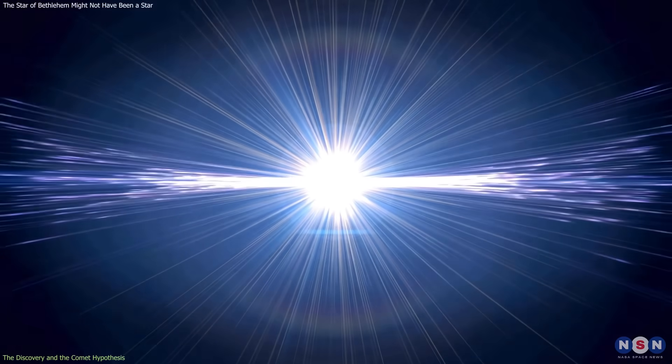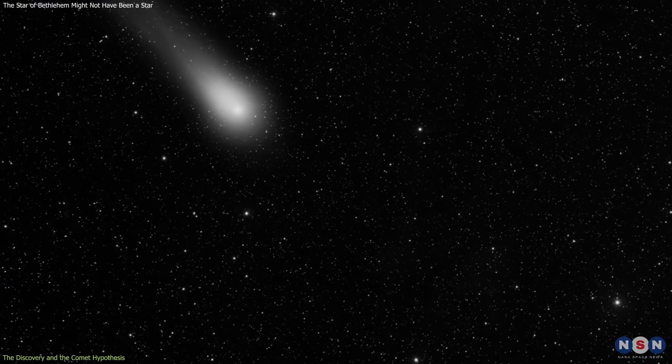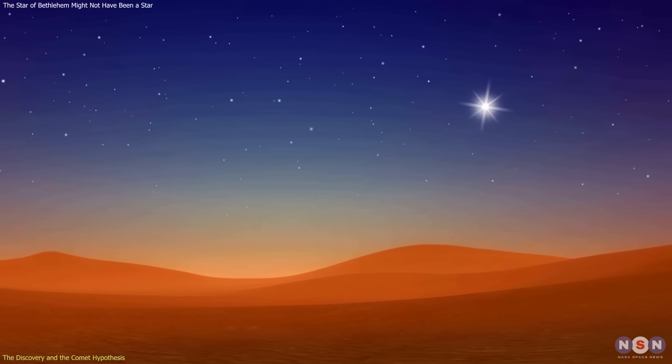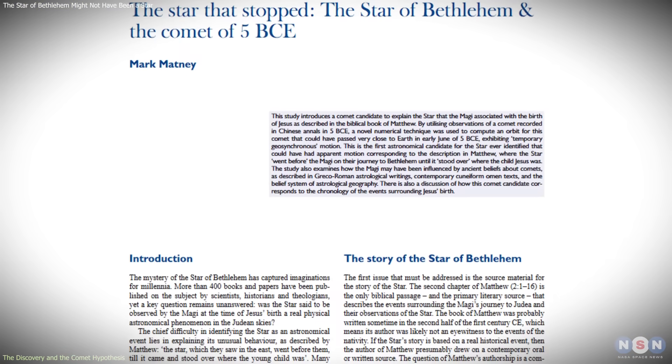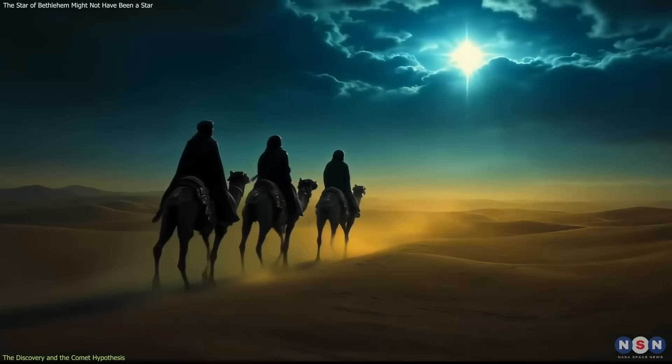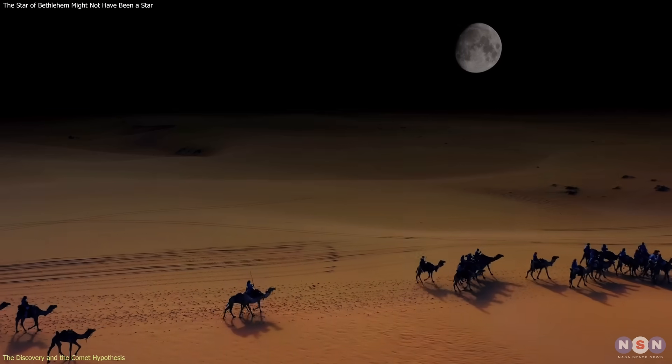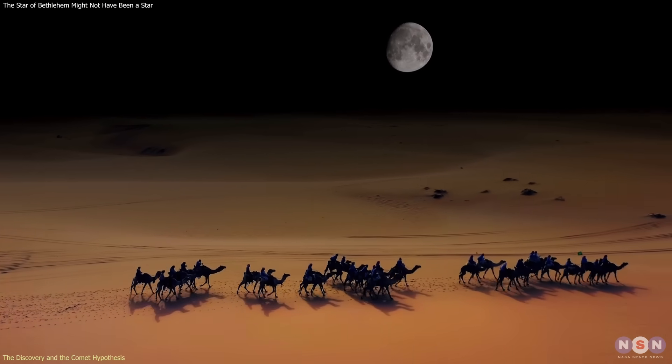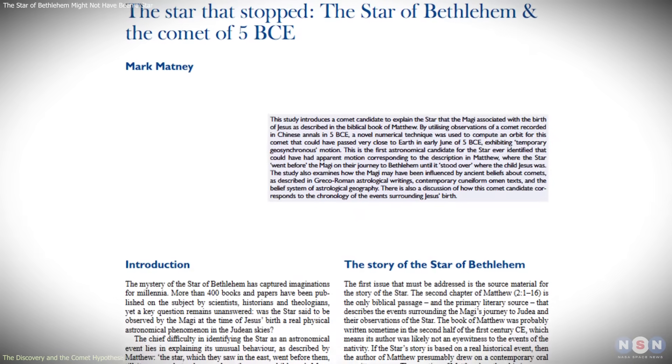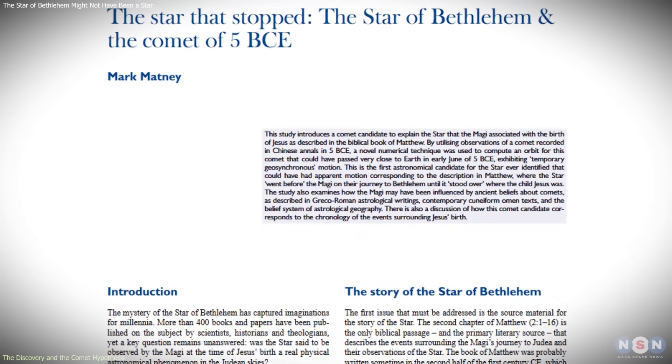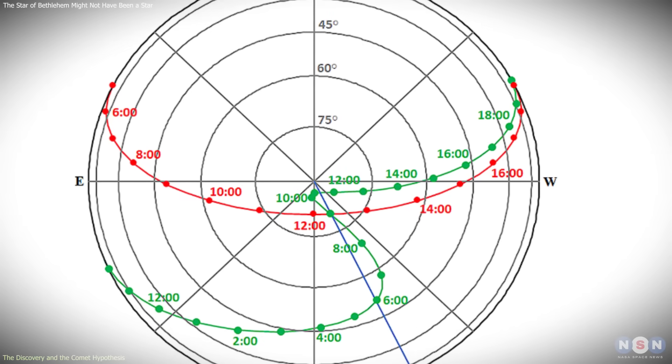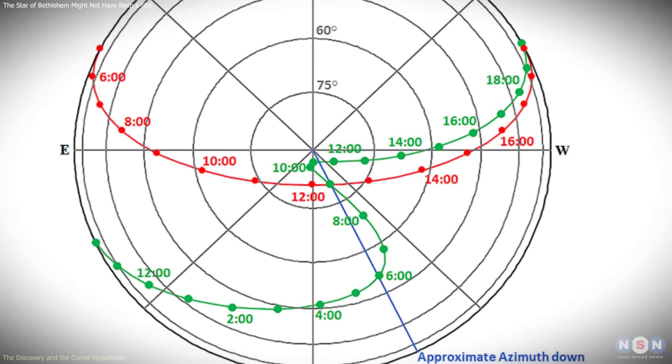In this scenario, the comet could also have been exceptionally bright. At such close distance, it may have appeared as bright as the full Moon and potentially visible during daylight hours. This detail aligns unexpectedly well with historical travel practices, since people in that era typically avoided long journeys at night due to safety concerns. Crucially, this hypothesis does not claim that this is what happened. It simply demonstrates that the described behavior is physically possible under known laws of motion.